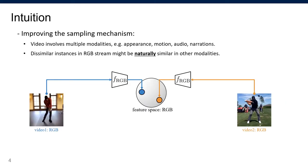This work focuses on video representation learning. Video involves multiple modalities like appearance, motion, audio, and narration. The key idea of this work is that for the same semantic class, dissimilar instances in one modality might be naturally similar in other modalities.